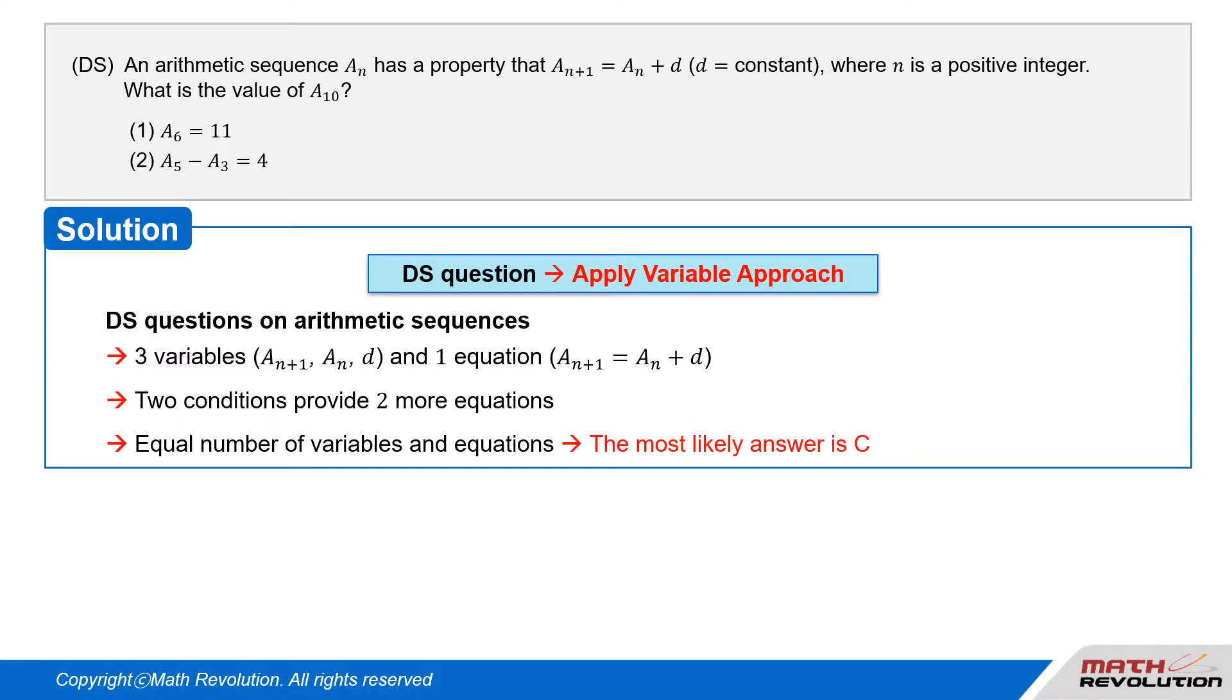Here we have three variables: a_{n+1}, a_n, and d, and one equation: a_{n+1} = a_n + d. The two conditions are likely to give us two more equations, resulting in equal number of equations and variables. So the most likely answer is C.